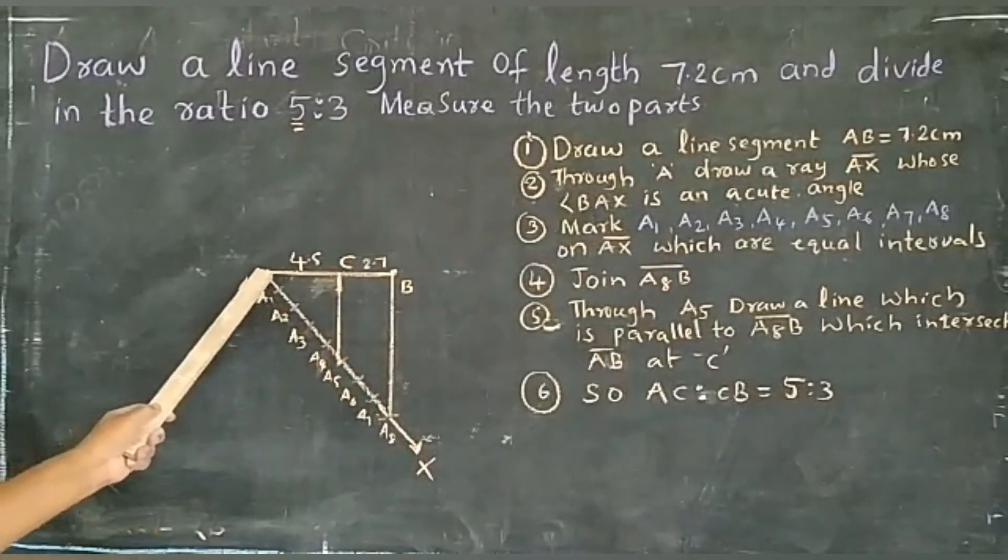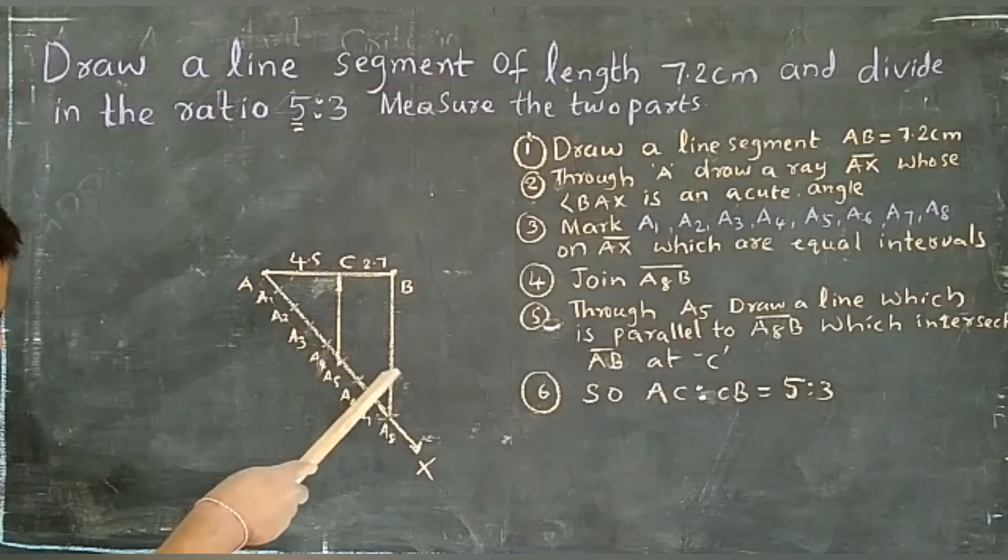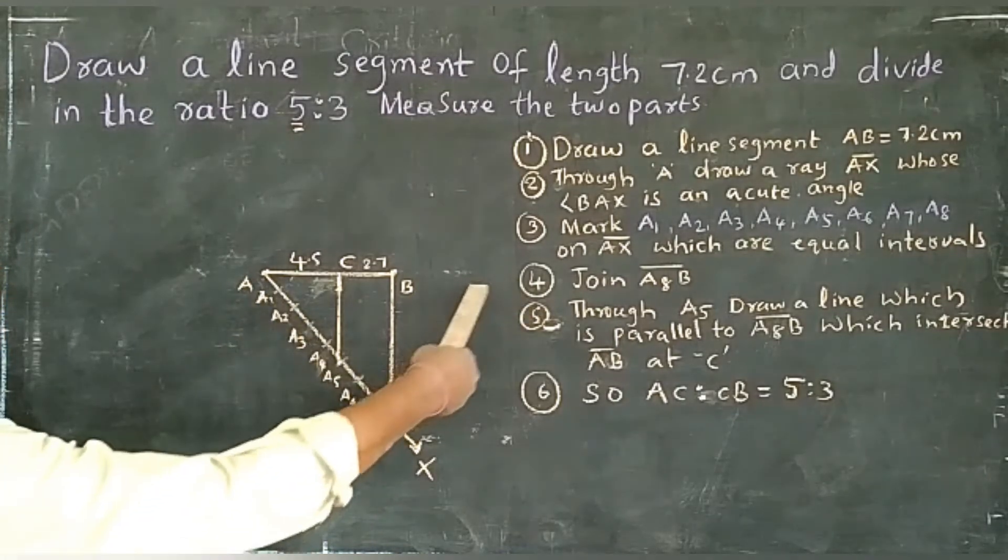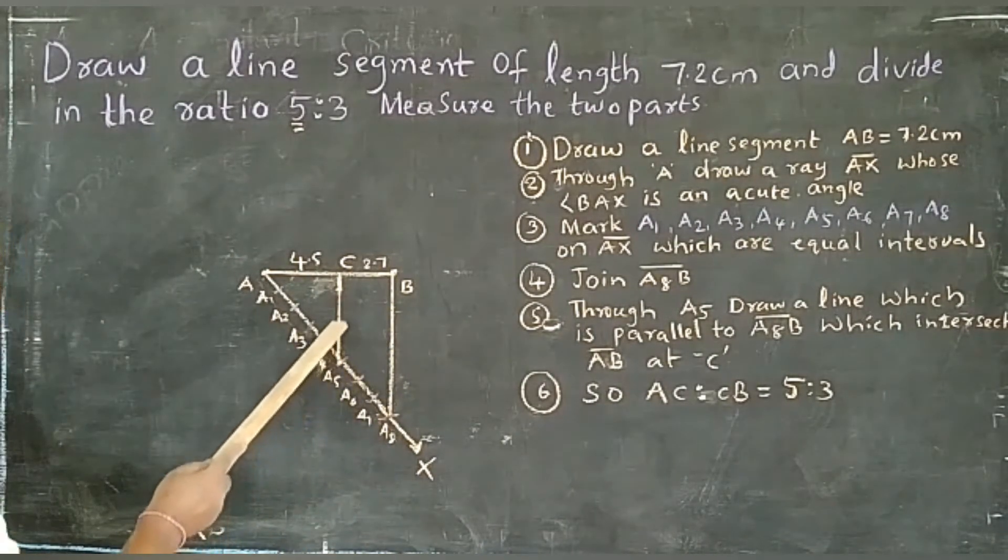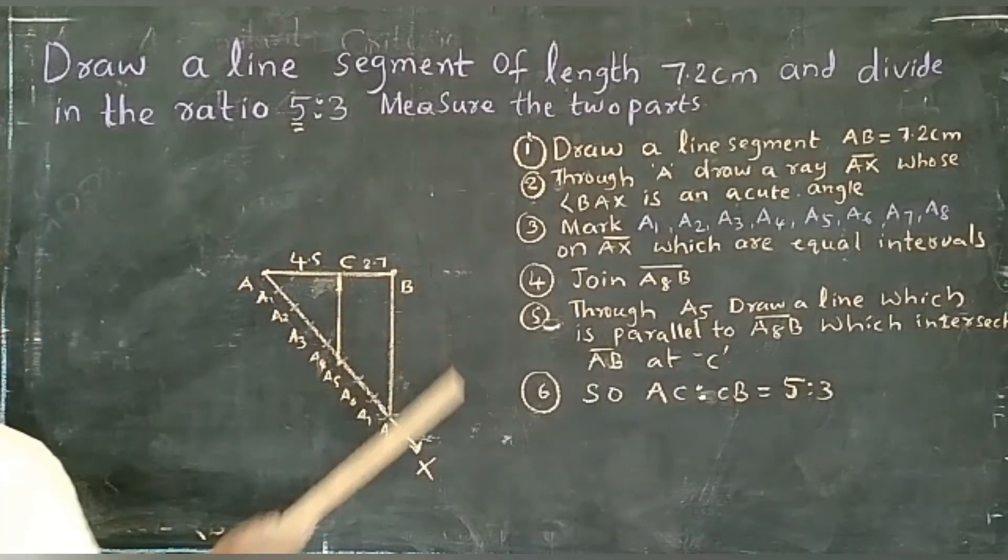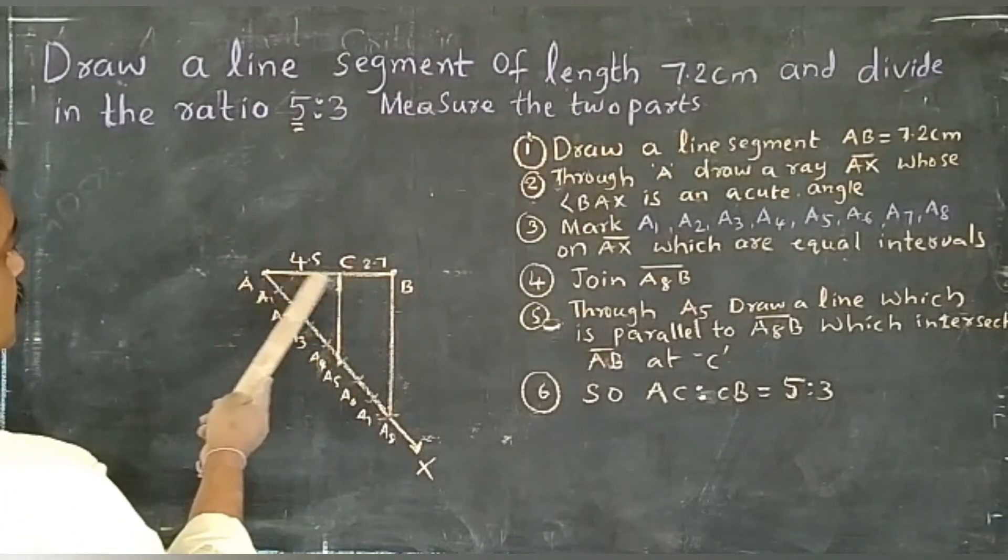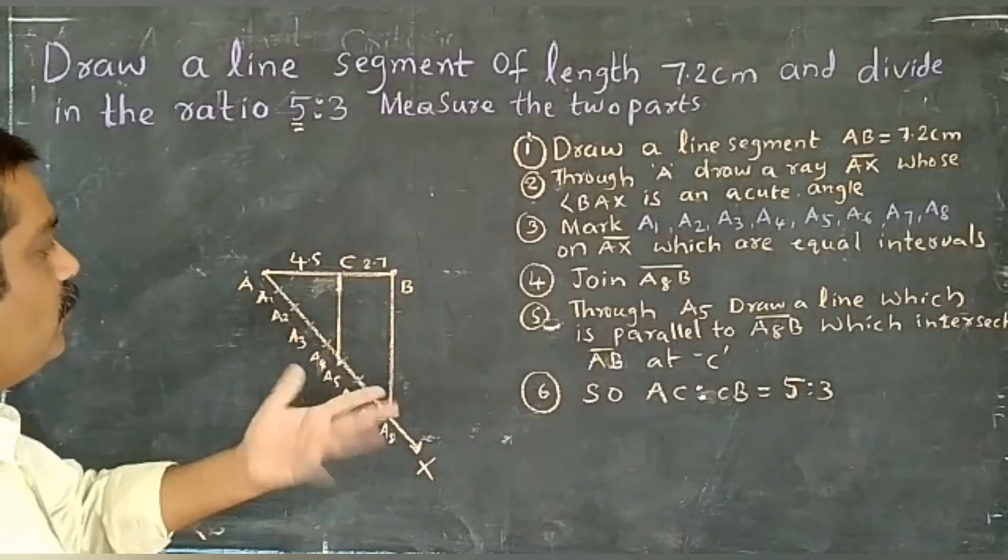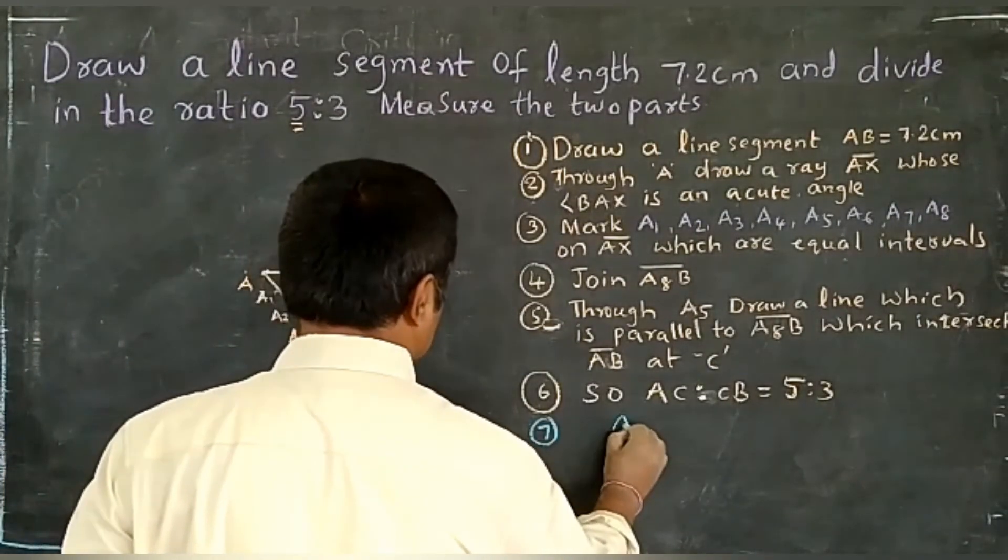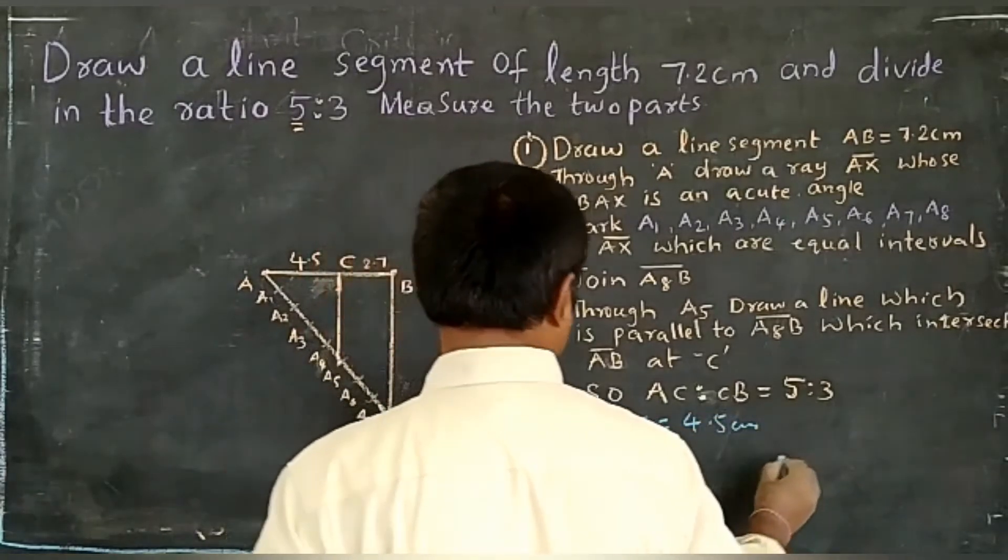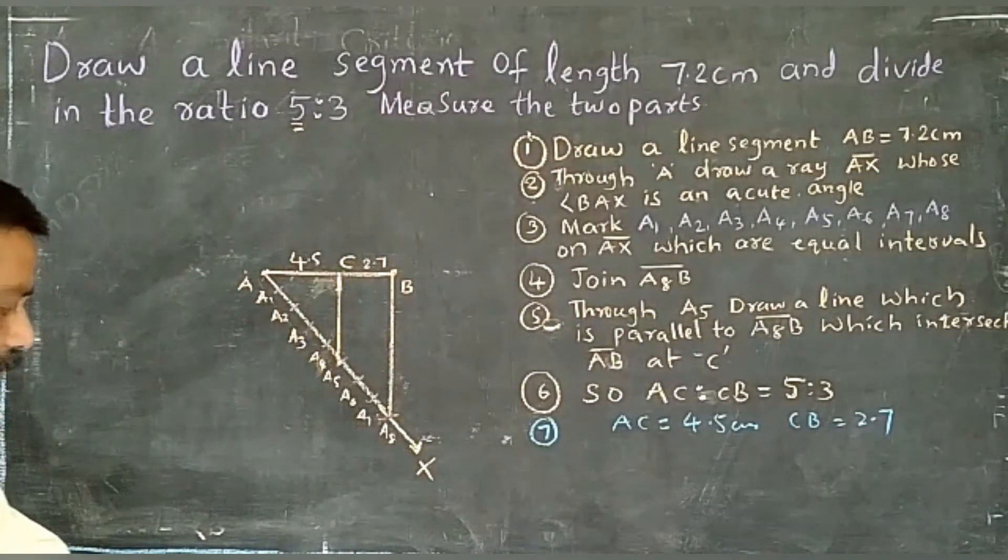where angle BAX is an acute angle. Mark A1, A2, A3, A4, A5, A6, A7, A8 which are equal intervals. Join A8B. Through A5, draw a line which is parallel to A8B, which intersects at C. The required ratio AC to CB equals 5 to 3. When I measure, AC equals 4.5 cm and CB equals 2.7 cm.